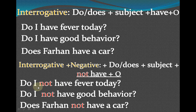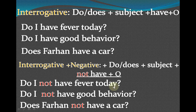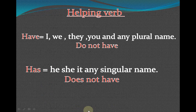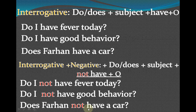For interrogative plus negative with 'what,' we ask: 'What do I not have fever today?' We put 'not' before 'have' and after the subject. For example: 'Do I not have good behavior?' — good behavior is my property. We must put 'not' before 'have' and after the subject. For example: 'Does Farhan not have a car?' — a car is Farhan's property.